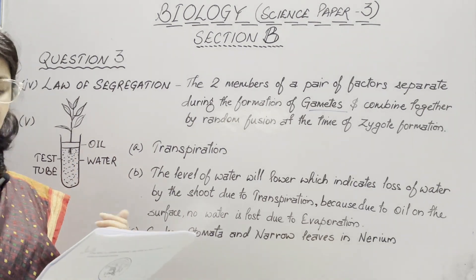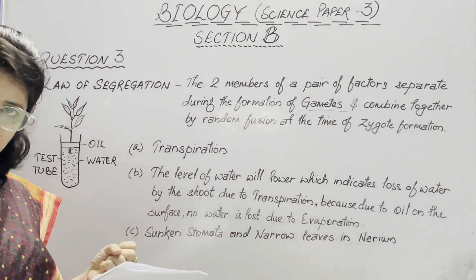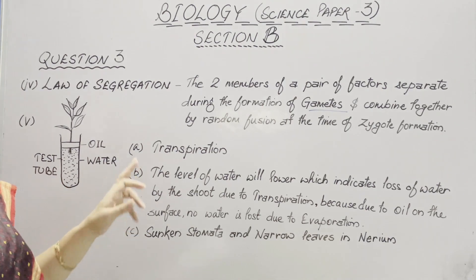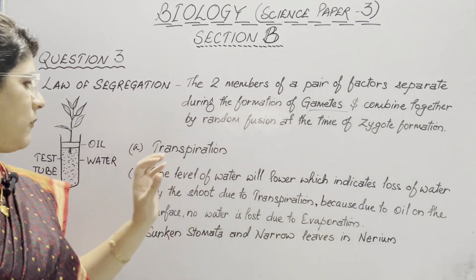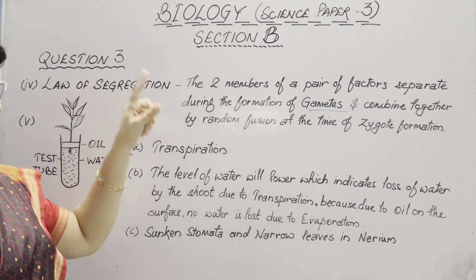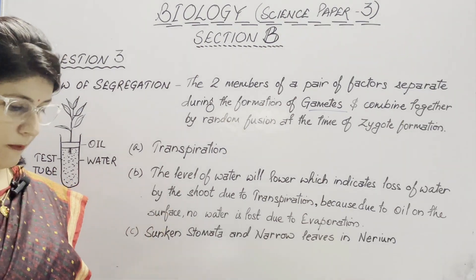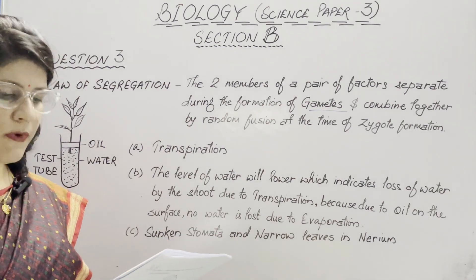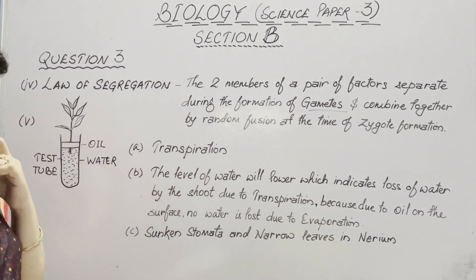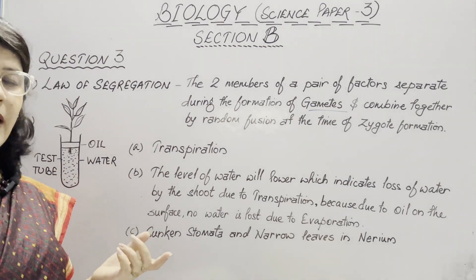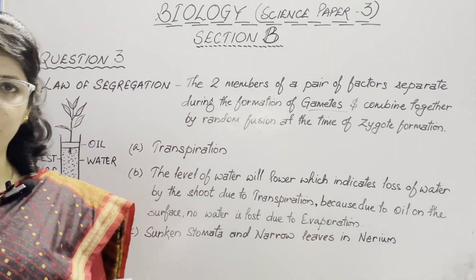Part B asks what you will observe with regard to the level of water when this setup is placed in bright sunlight. When placed in bright sunlight, the level of water will lower and reduce, which indicates loss of water by the shoot due to transpiration. Because of the oil on the surface, no water is lost due to evaporation. In Part C, one adaptation found in plants to overcome transpiration is sunken stomata and narrow leaves present in the nerium plant.